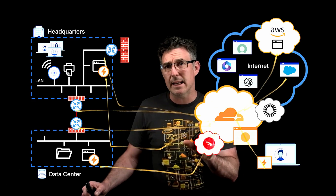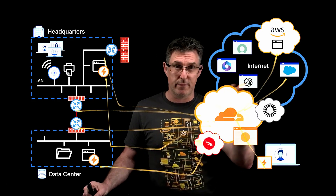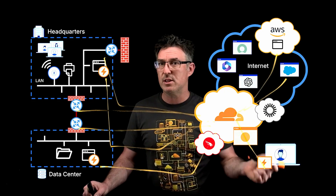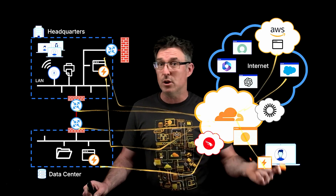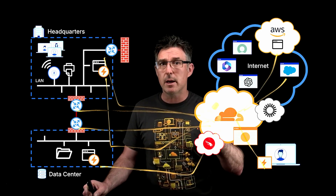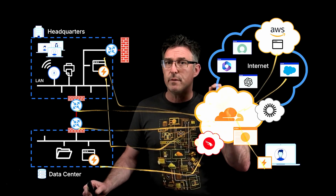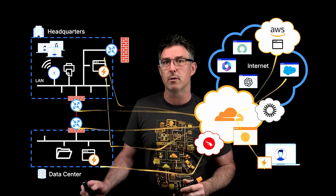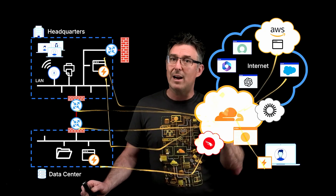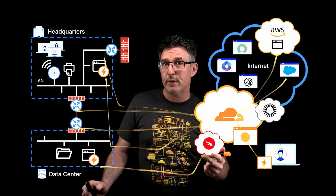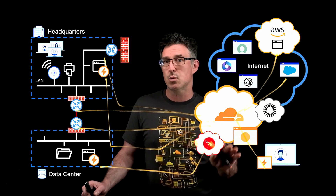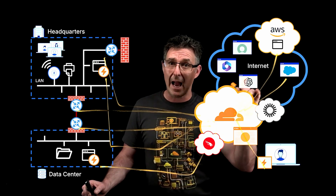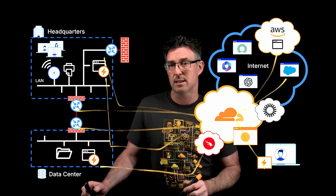Finally, we have context about the traffic itself — where the source request is coming from, what IP address, and we can geolocate that IP address. We can also use virtual network tags to know what network you're coming from. So identity, device, and traffic context can all be combined into a policy to control access to self-hosted and SaaS applications.